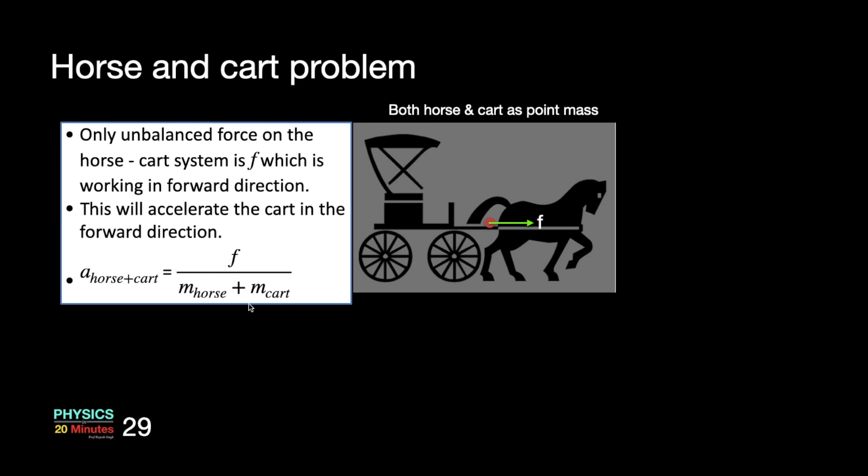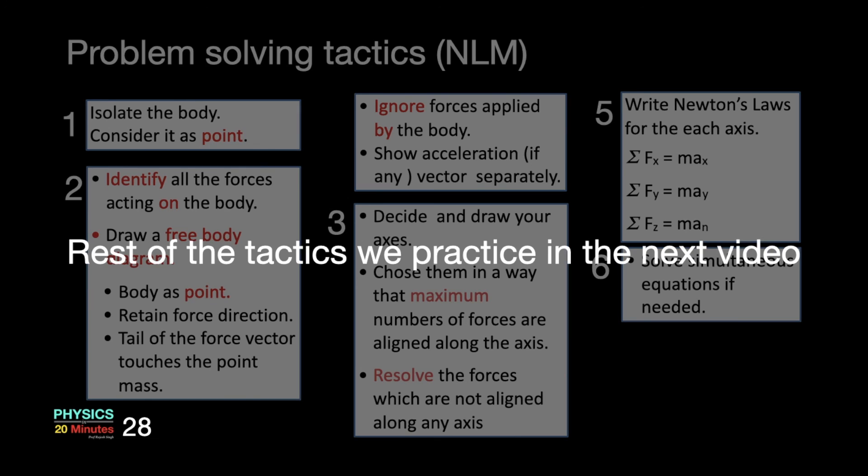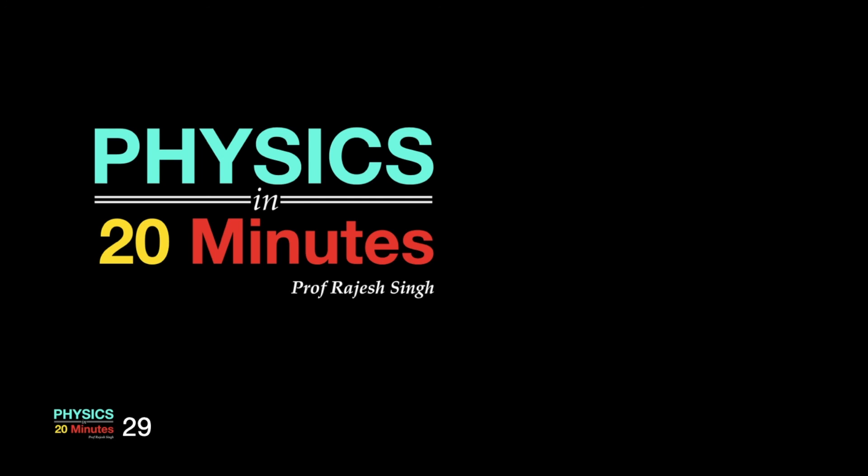This is how a typical horse and cart system accelerates forward. The horse pulls the wagon and the wagon pulls back the horse — these forces are equal and opposite. But still the system moves forward because the earth applies a force on the horse which has a component in the forward direction. The rest of the problem solving tactics we will practice in the next video. Thank you.